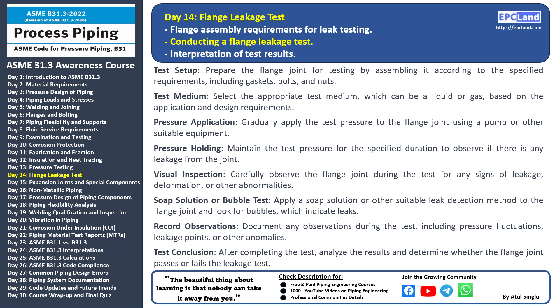Test medium: choose the appropriate test medium based on the application and design requirements — it can be either a liquid or gas depending on the system's characteristics. Pressure application: gradually apply the test pressure to the flange joint using a suitable pump or equipment to simulate operational conditions. Pressure holding: maintain the test pressure for the specified duration to observe whether there is any leakage from the joint under sustained pressure.